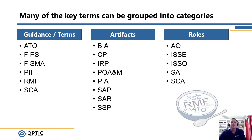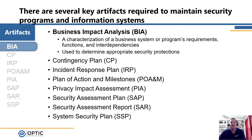Next we have the artifacts — the documents, processes, and things that support the Risk Management Framework process itself. In alphabetical order, we start with BIA, or Business Impact Analysis. A BIA is the analysis done to understand the business purpose of a system or program being implemented, so that we can determine what the confidentiality, integrity, and availability requirements are for that system.